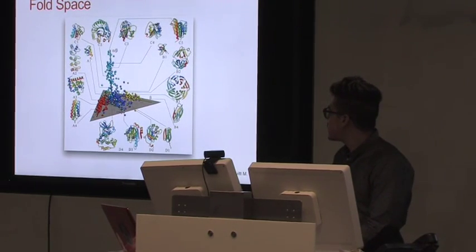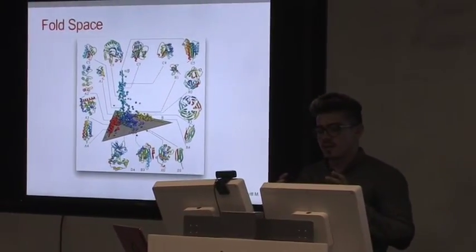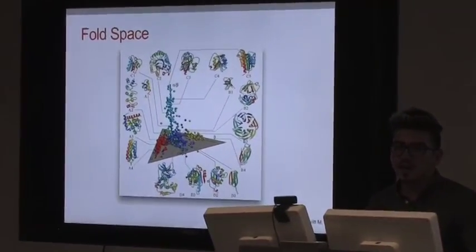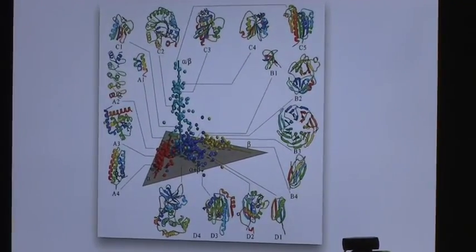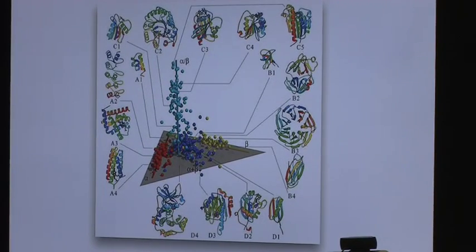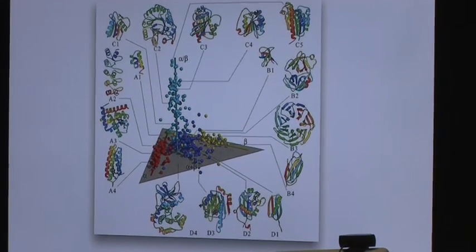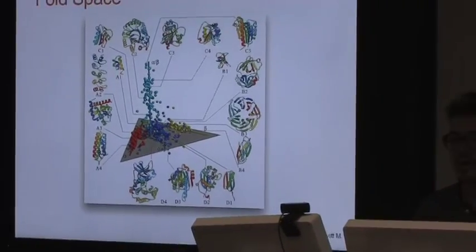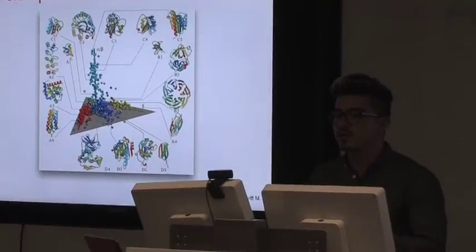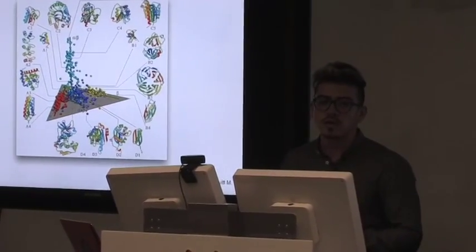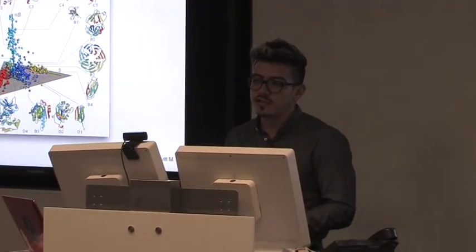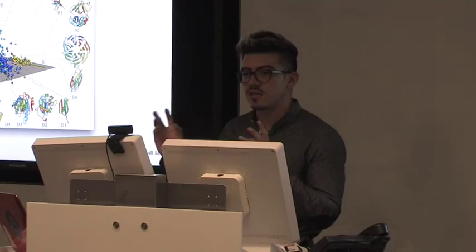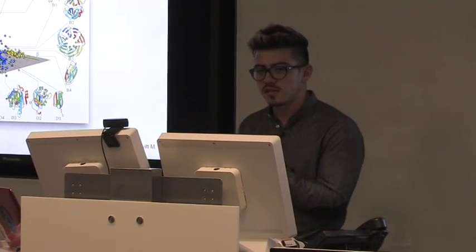So there are many folds, many kinds of structures that protein can have. This is a first attempt to try to represent what is called the fold space. Fold space is like a conceptual framework where you can put any idea about protein structure or function or evolution. For example, if you want to say that two protein structures are very similar, you can say that they are close in this fold space.